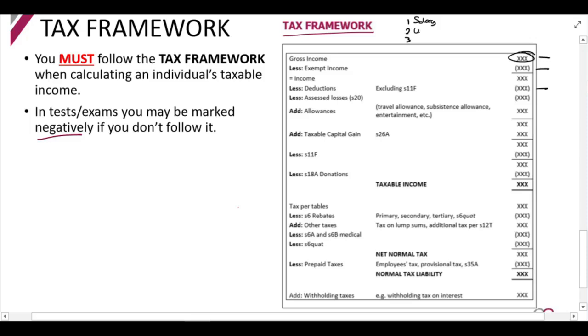So number one might be that they tell you that you earn a salary, so you'll only have gross income. Number two might say that you've got a uniform allowance, right? And you'll remember uniform allowances, there's a gross income element and an exempt income element. And number three might be that they tell you this person has a rental property and this rental property earns an income, so monthly rental and there's also some expenses.